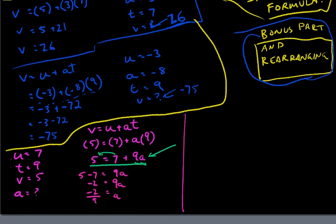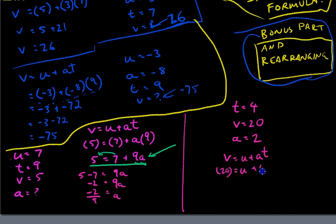Quick, really quick example. Super quick example here. We know T equals 4, V equals 20, A equals 2. We know the formula is V equals U plus AT. We can put in the values that we know: V equals 20, we don't know U, A equals 2, and T equals 4. So we know that 20 equals U plus 2 times 4, which is 8. Now we need to get U by itself, so we move that 8 over there. 20 minus 8, I moved it over, it became negative. So U equals 12.